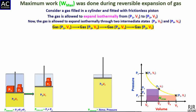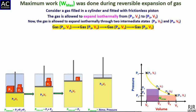Similarly, the weight exerting pressure P4 is removed from the upper surface of the piston. The pressure inside the gas increases and expands until the pressure equals the external pressure P2, attaining a final volume V4 from the initial volume V3. The work done during this expansion equals the area under the curve between states P3,V3 and P4,V4, denoted in the graph by the second indigo colored rectangle.